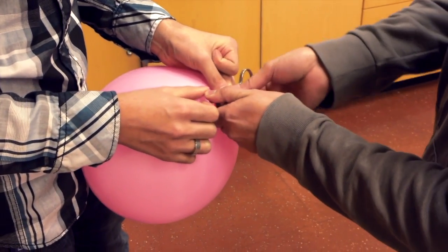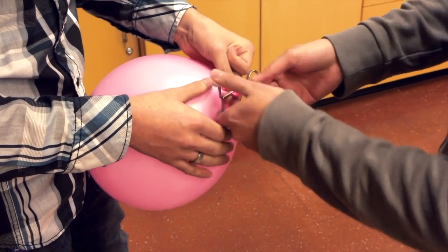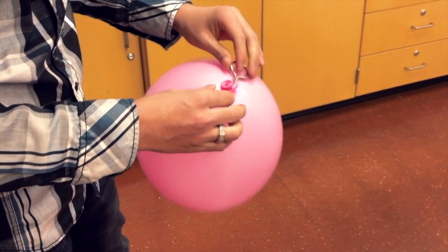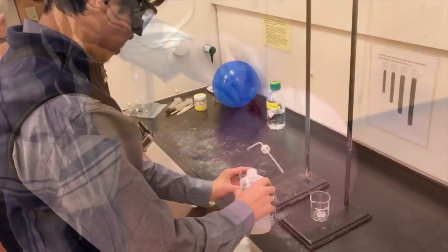We're going to start off by clamping a balloon using a spring clamp. As you can see here, it works a little bit better with two people. You can do it by yourself, but with two people it just makes things go a little bit smoother.